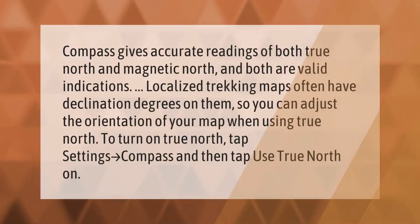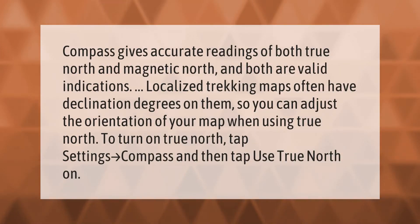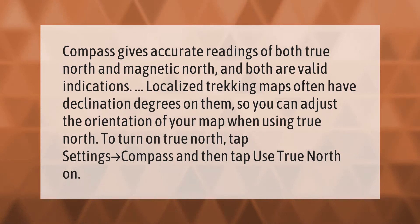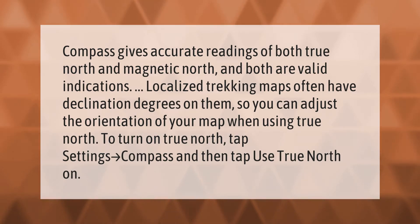Compass gives accurate readings of both true north and magnetic north, and both are valid indications. Localized trekking maps often have declination degrees on them, so you can adjust the orientation of your map when using true north.